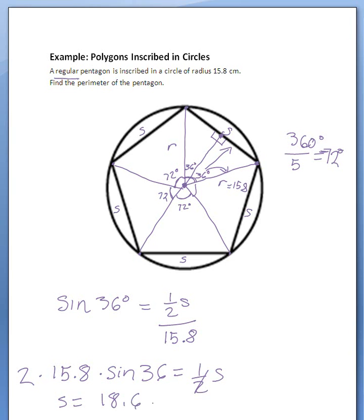Okay, are we done? Let's go back and read what we wanted. We wanted the perimeter of the pentagon. We found the length of S, which is a fifth of the perimeter — we have five of those pieces, five of those S's added together. 5S gives us the perimeter.